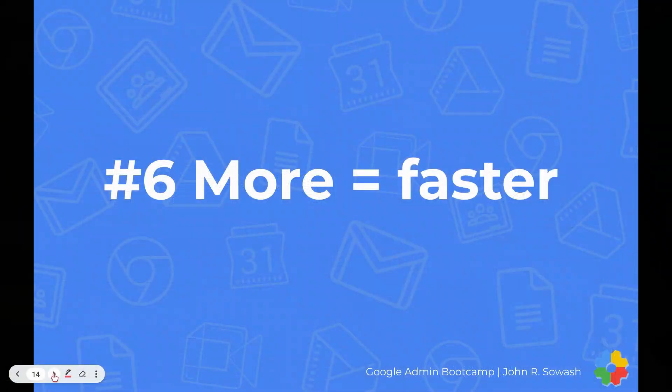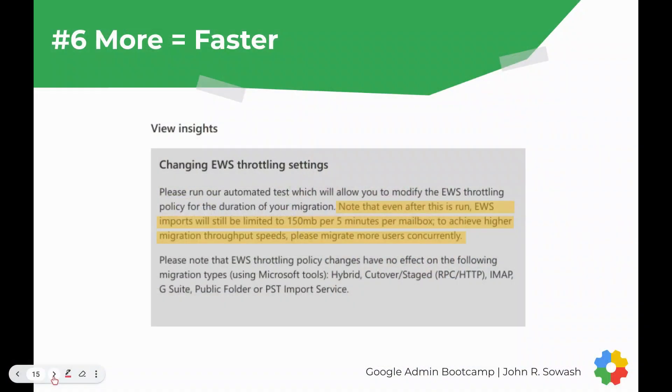Number six is something that does not make sense but does relate to the throttling policy. I kept getting error messages during testing saying server at capacity, and with 150 users I thought I'd have to break them into small groups so I didn't overwhelm the server. The opposite is actually true. The throttling policy is based on concurrent migrations — the more users you migrate, the larger your data cap becomes. It's 150 megabytes per mailbox, so if you do 100 mailboxes, it's 100 times that limit. We learned over time that it's better to migrate more users concurrently than to break them into smaller groups.